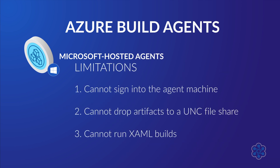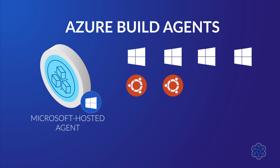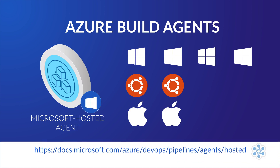Some other limitations of Microsoft hosted agents are that you cannot sign into the agent machine, you cannot drop artifacts to a UNC file share, and you cannot run XAML builds. Microsoft hosted agents also use a standardized list of operating systems and software configurations. There are eight options: four versions of Windows, two versions of Ubuntu, and two versions of macOS. You can find the list at the provided URL. So if you need a version of an operating system or a Visual Studio that's not part of the standard list, you will need to use a self-hosted build agent instead.